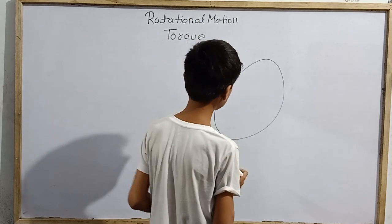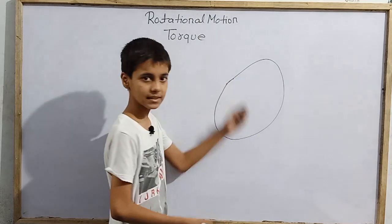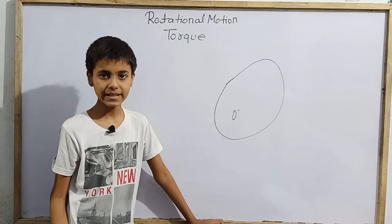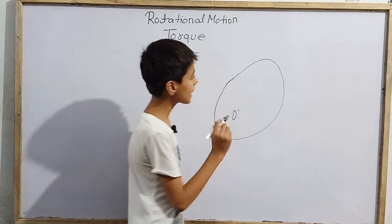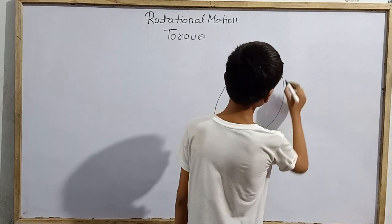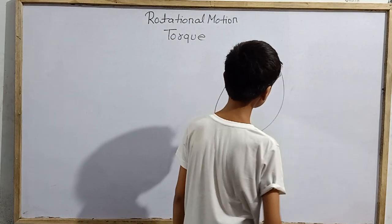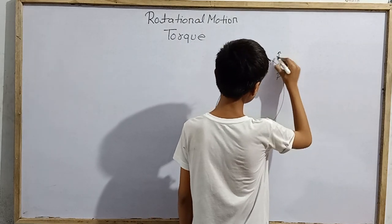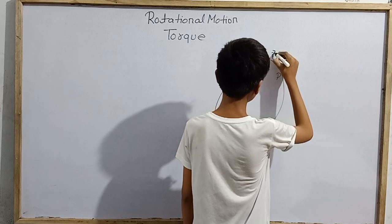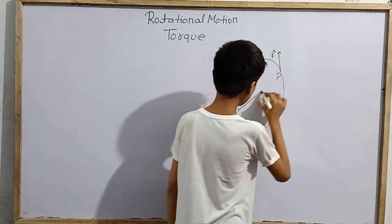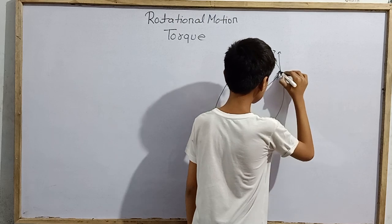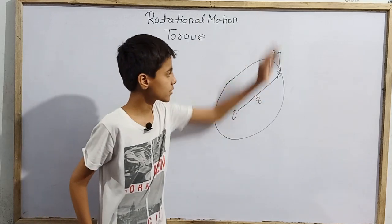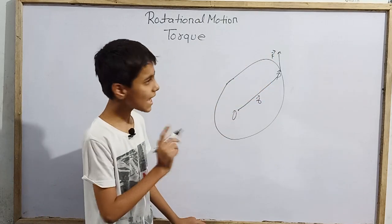First of all, we are going to have an introduction. Here I have supposed to be a rigid body. Now what do I do here — let me say that if I take the point P, I have supposed to be a position P and there we have a force. I try to apply force vector F at the point P. There I have a position vector R, and the force goes here.